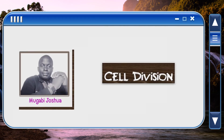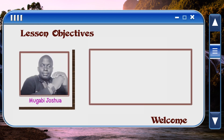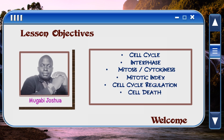Hello, my name is Joshua Mugabe. I welcome you to cell division. Our lesson objectives today are: we shall look at the cell cycle, interphase, mitosis and cytokinesis, mitotic index, cell cycle regulation, cell death, and lastly we shall talk about cancer development. Welcome.